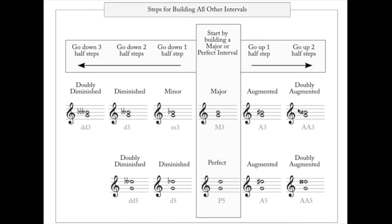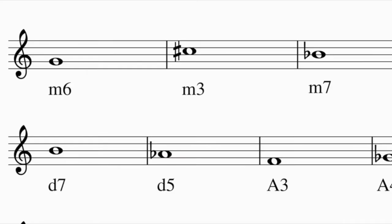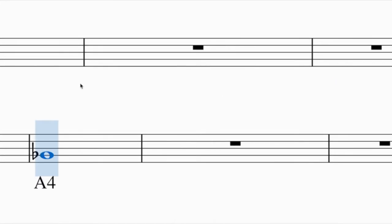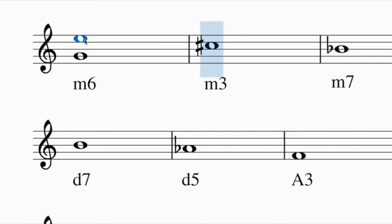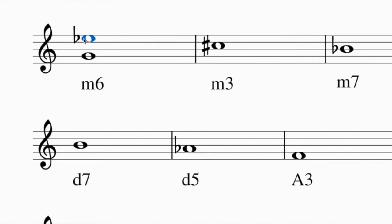Let's try some minor interval examples. To build a minor sixth above G: first build the major sixth by counting up six. In the key of G with one sharp, E is natural, so I have a major sixth. To make it minor, I lower the top note a half step - E becomes E flat, giving me a minor sixth.